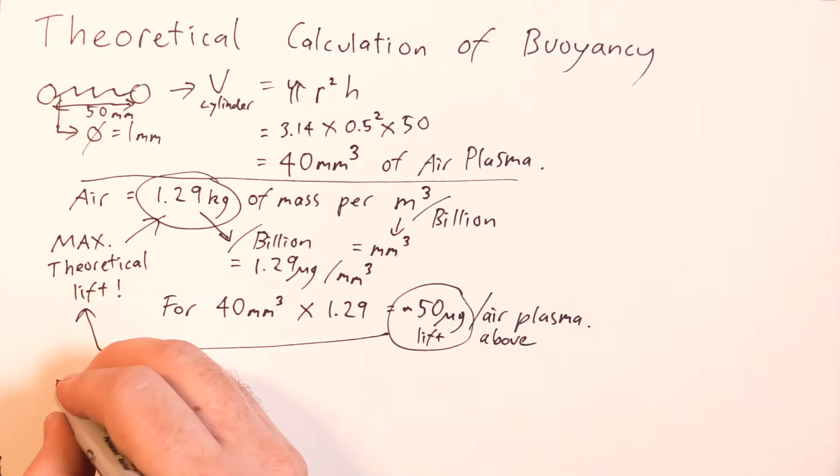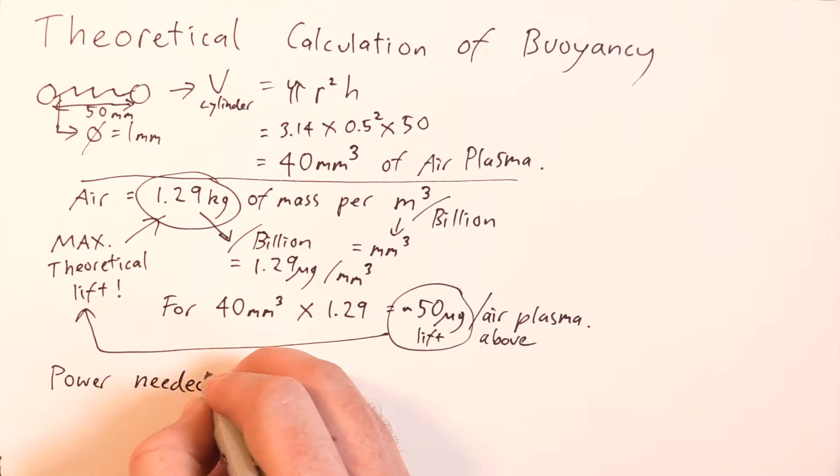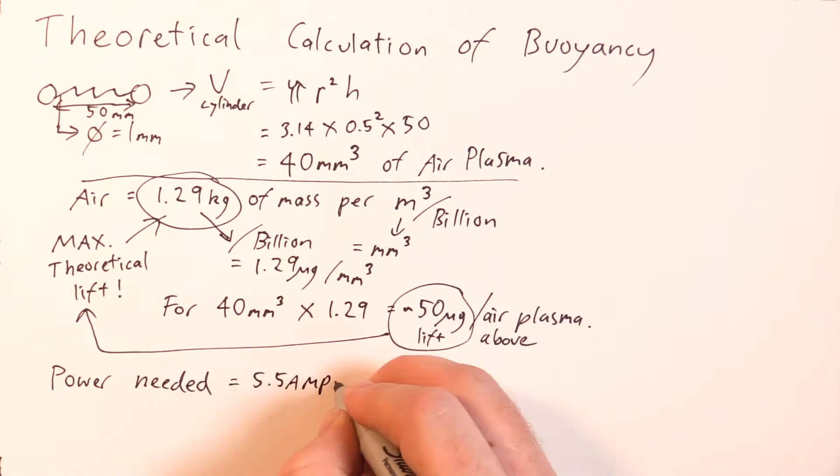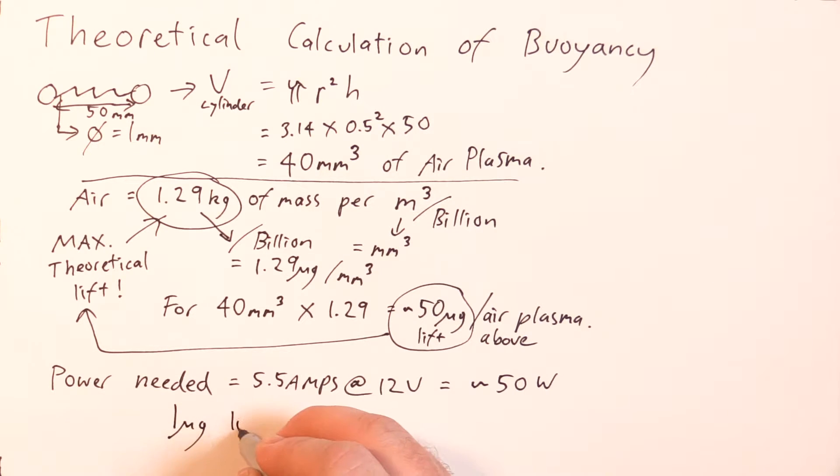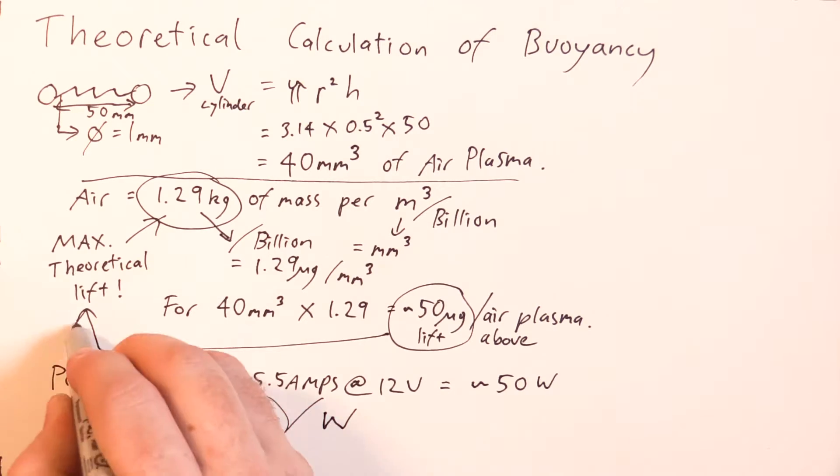Let's look at the power that's needed to generate the air plasma. The Jacob's Ladder kit I used uses around 5.5 amps at 12 volts, so around 50 watts of energy. So roughly you're looking at 1 watt of energy per microgram of lift, assuming the theoretical maximum lift.